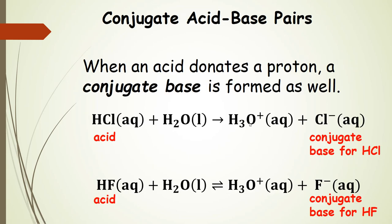Now we'll talk about conjugate acid-base pairs. An acid is going to donate a proton to water, so the H+ is going to stick to the water molecule and we get hydronium. When that happens, we form something called a conjugate base. The conjugate base is whatever is left over after you take that H+ off the acid — removing H+ leaves that extra electron with chloride, so chloride anion is the conjugate base. For hydrofluoric acid, the H+ associates with water to form hydronium, and the conjugate base — whatever is left after removing H+ — is fluoride anion.